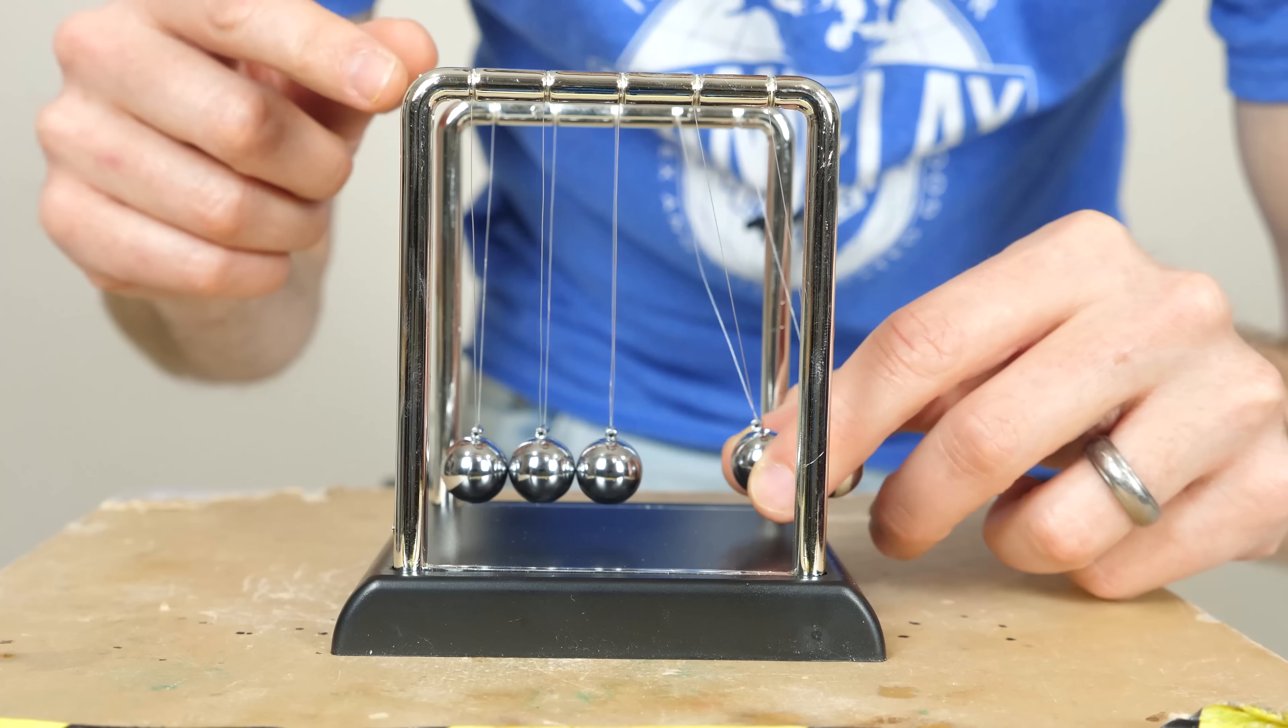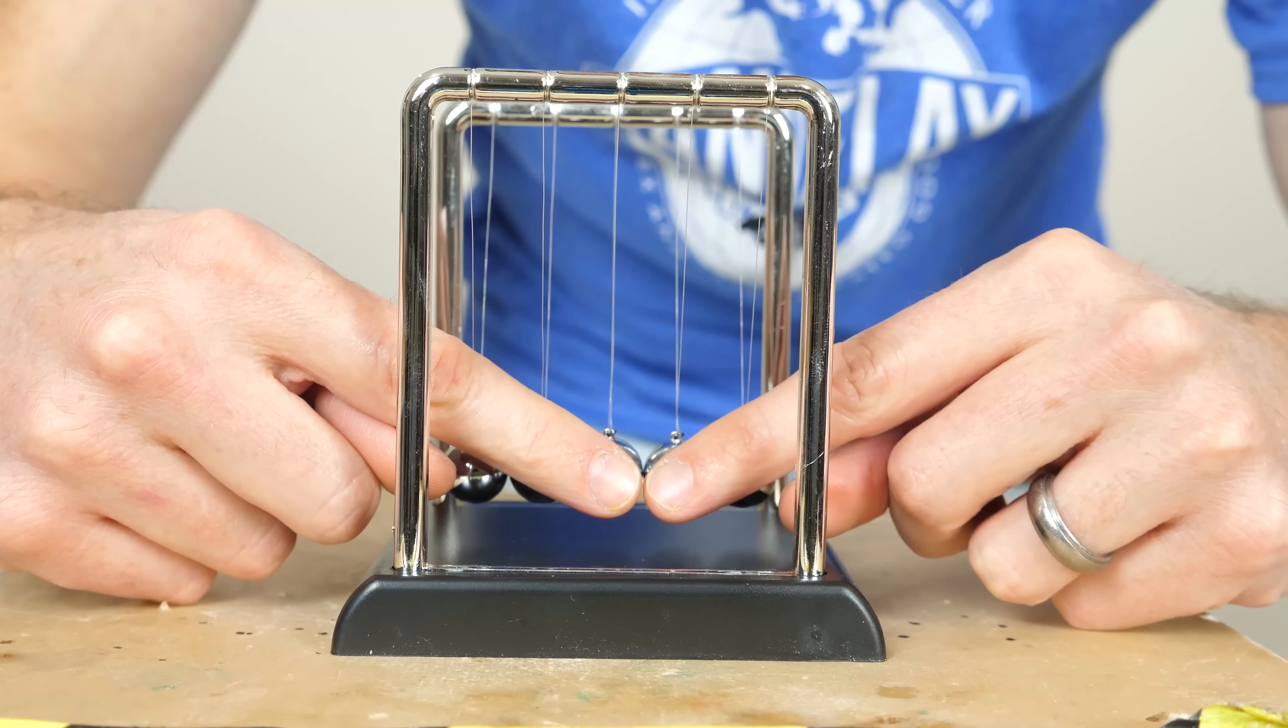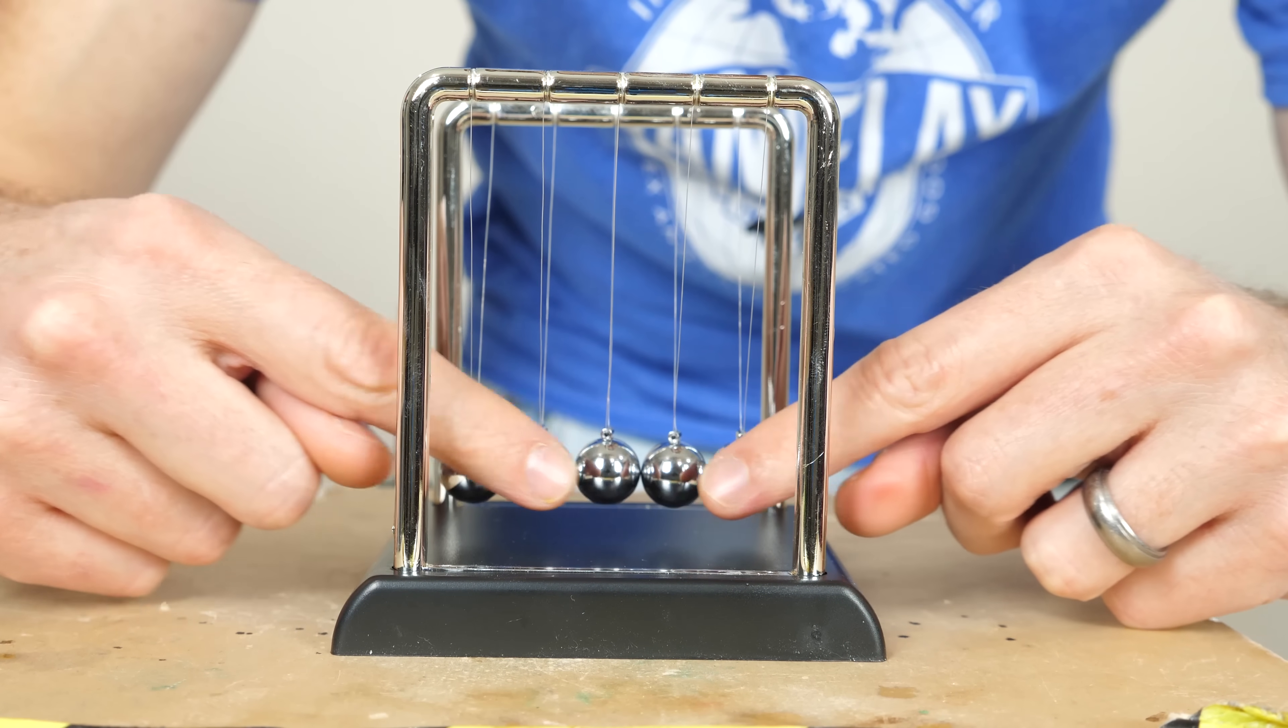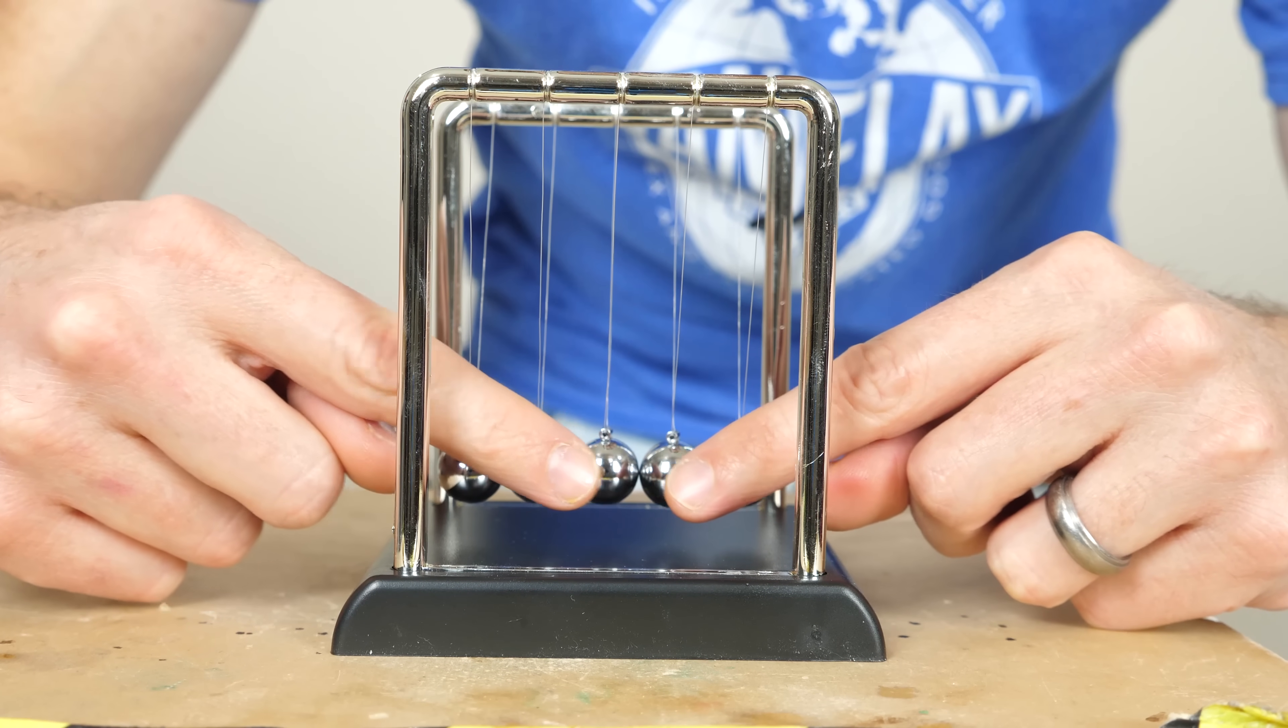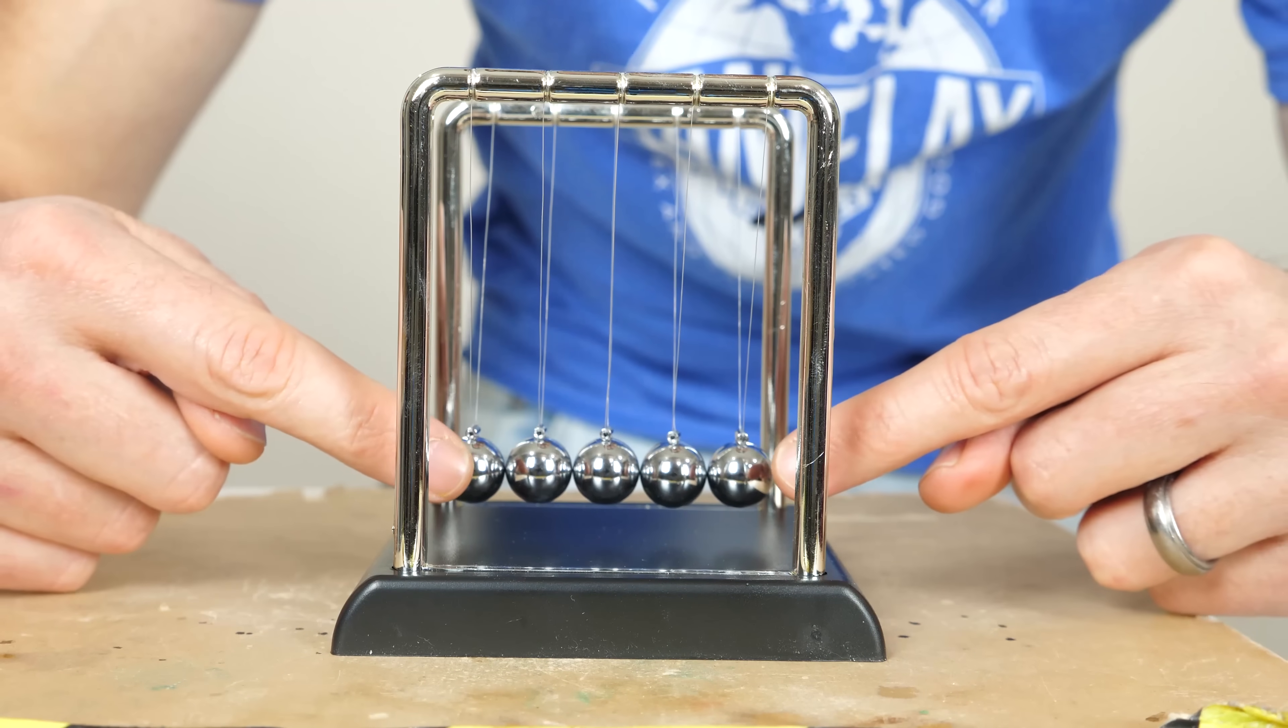So when you release these first two balls and they collide, what happens at the point of collision is it sends a shockwave in both directions. And that shockwave is going to propagate the length of at least five balls.